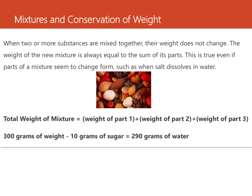This rule can also be used to find the weight of one component of a mixture. For example, a mixture of sugar dissolved in water had a total weight of 300 grams. The mixture was separated by boiling the water so it evaporated, and the sugar left behind had a weight of 10 grams. So the weight of the water that evaporated must equal the remaining weight in the mixture — if the total mixture was 300 grams and the sugar was 10 grams, then the water must have weighed 290 grams.